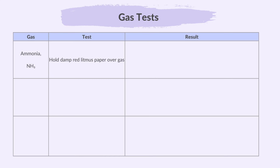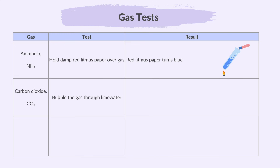For ammonia, hold damp red litmus paper over the gas — it turns blue if the gas is ammonia. For carbon dioxide, bubble the gas through lime water — lime water turns milky if the gas is carbon dioxide.